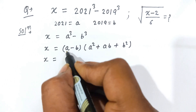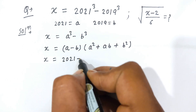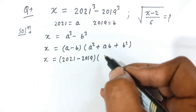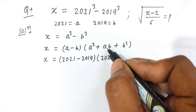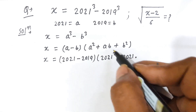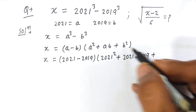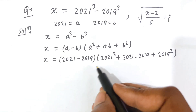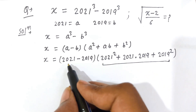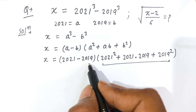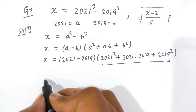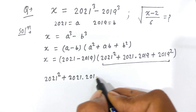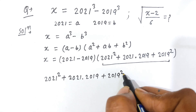On the left hand side is x, this is equal to a replaced by 2021, minus b replaced by 2019, and here a is replaced by 2021 squared, plus a that is 2021 times b that is 2019, plus b that is 2019 squared. Now, 2021 minus 2019 equals 2, so first let's simplify the expression 2021 squared plus 2021 times 2019 plus 2019 squared.